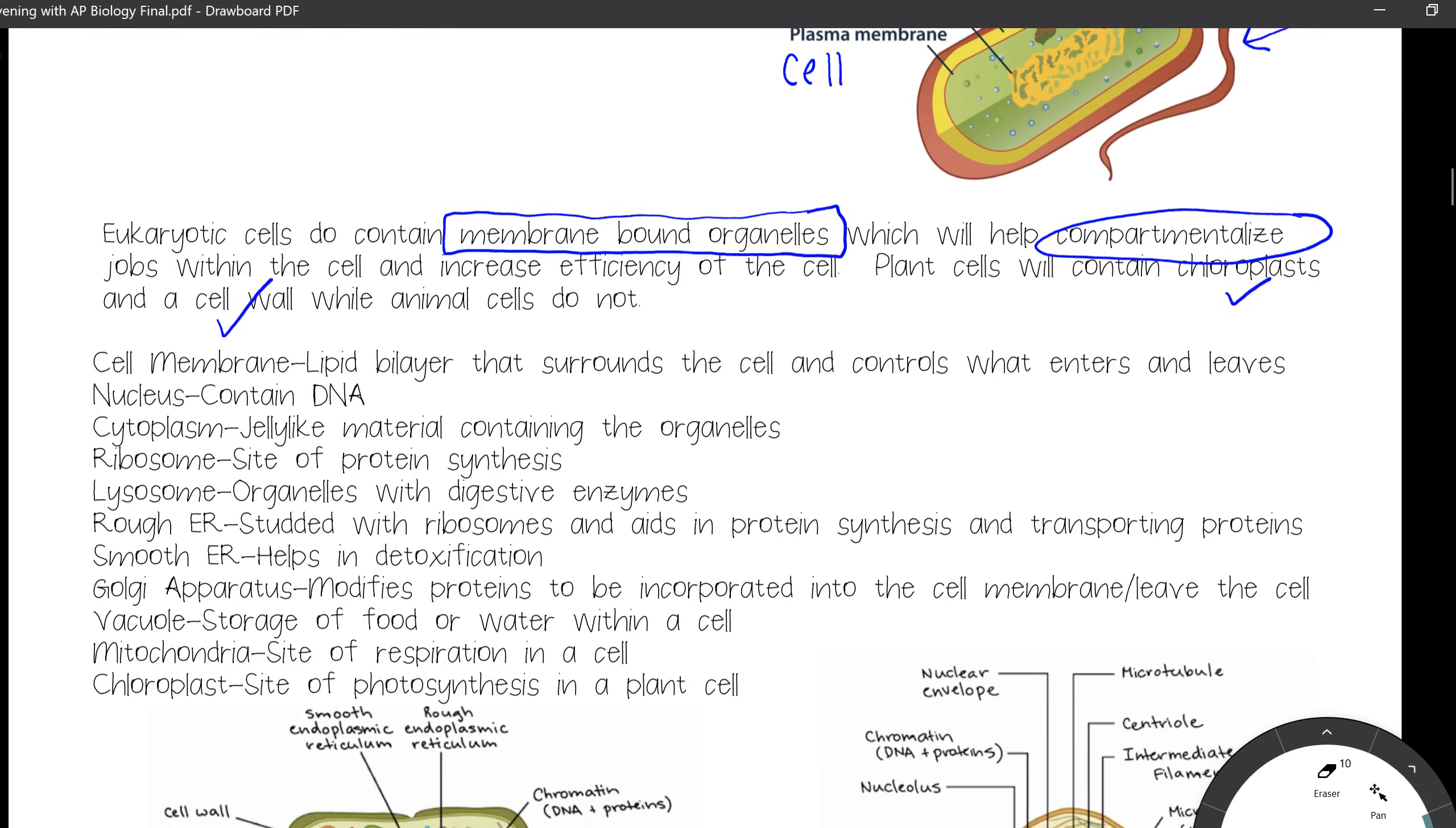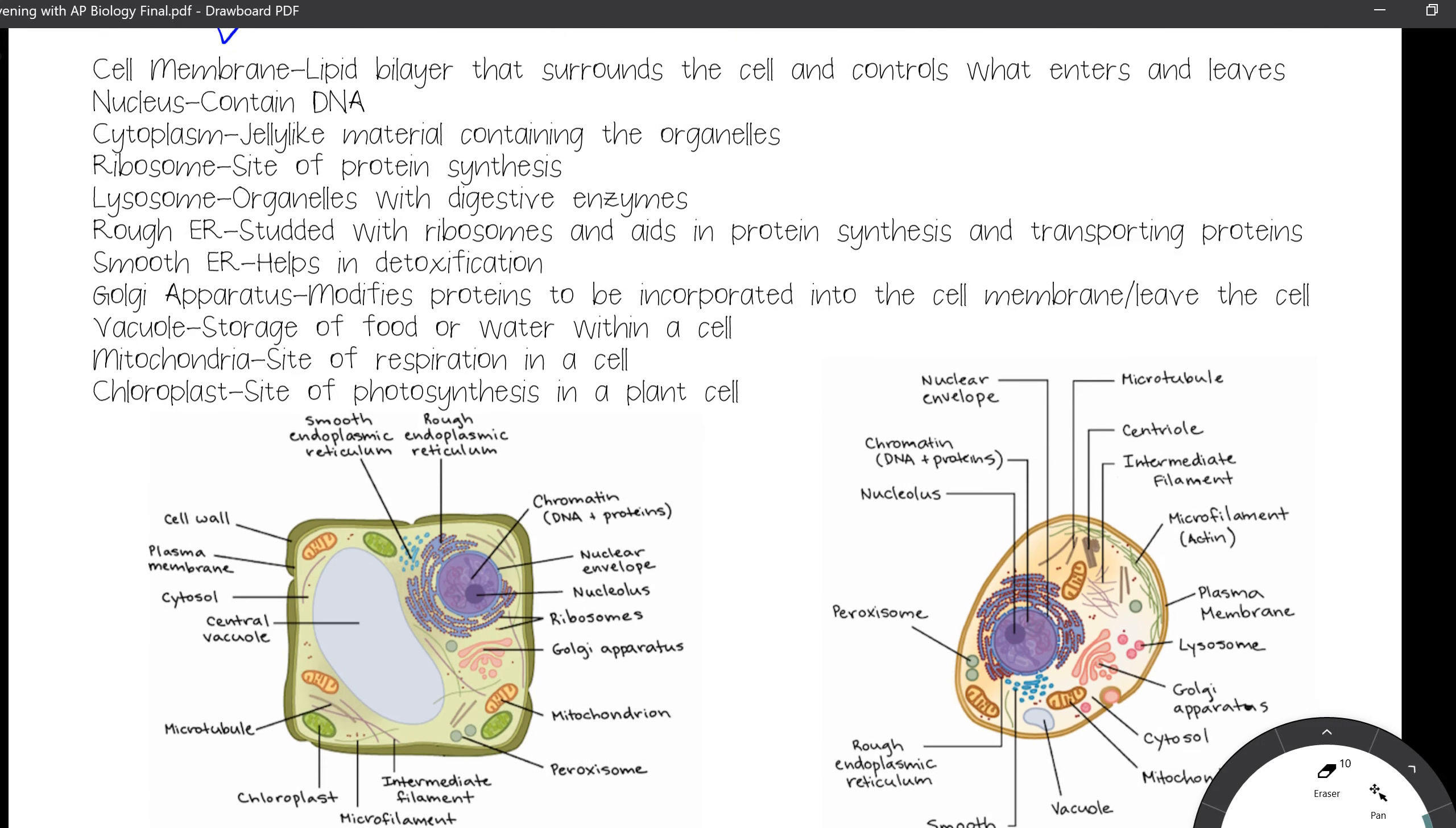So let's start off with the cell membrane. We kind of talked about that in the last discussion. That is going to be a phospholipid, or a lipid bilayer, and that surrounds the cell and controls what enters and leaves. The nucleus is where the DNA is going to be contained. In the event that mRNA needs to get created, that will also happen in the nucleus. Your cytoplasm is a jelly-like material containing the organelles, things like lysosomes, and rough endoplasmic reticulum, and smooth endoplasmic reticulum. The ribosomes are the site of protein synthesis. Lysosomes are going to be organelles with digestive enzymes, and in the case of a white blood cell, those digestive enzymes may be used to break down foreign invaders, or a cell may go through apoptosis by releasing those digestive enzymes and ultimately ending that cell's life cycle.